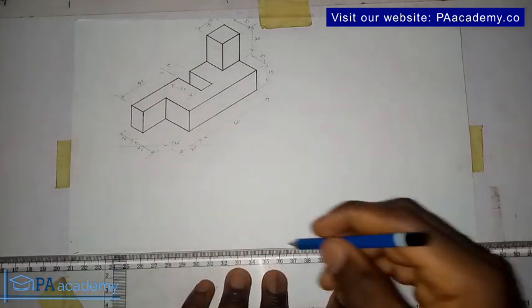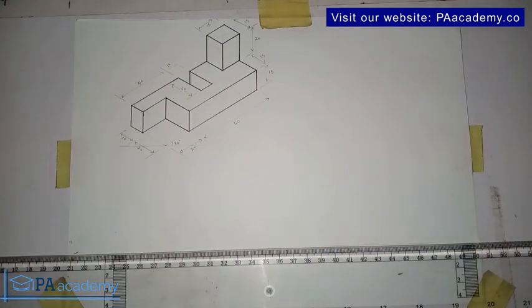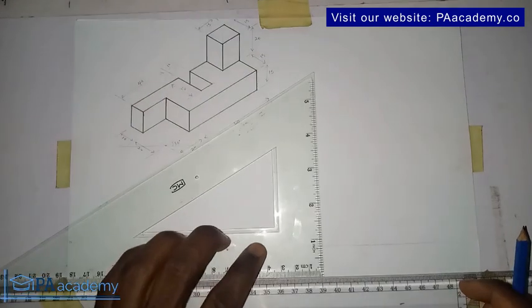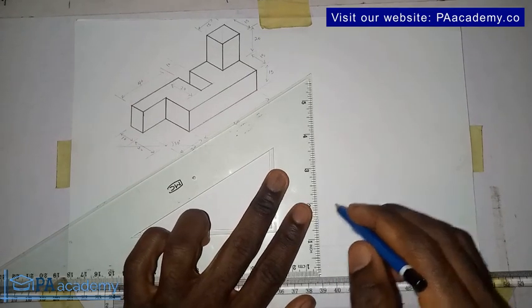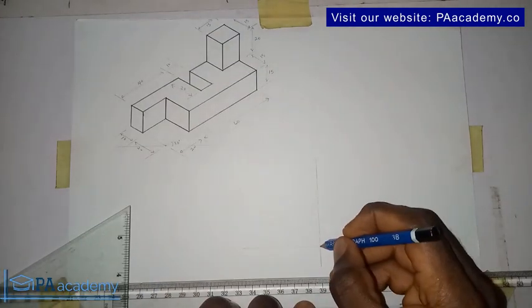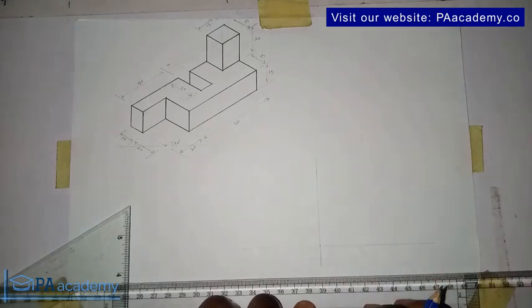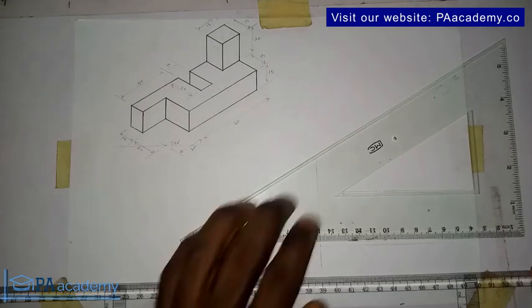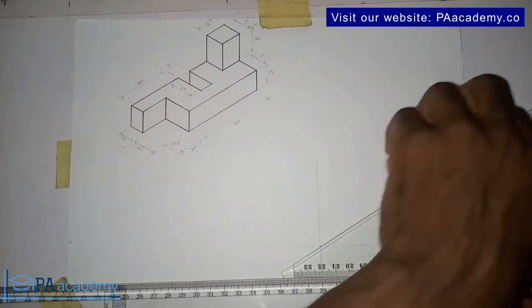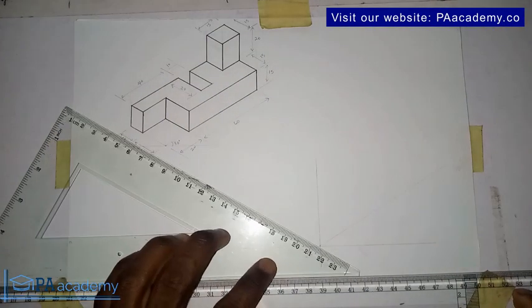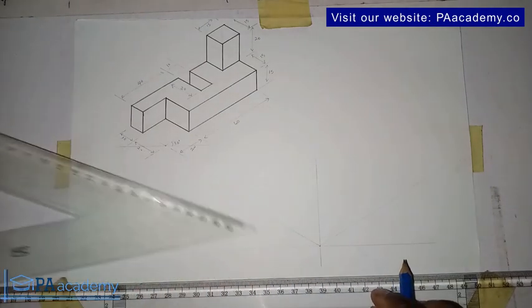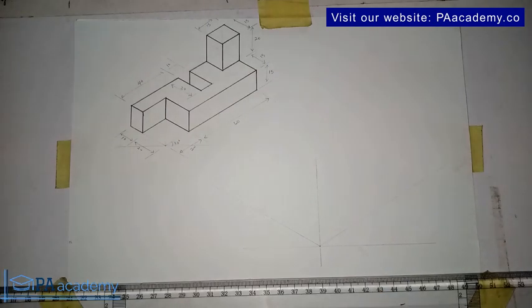So to start with, we are going to be drawing our horizontal line. So I'll bring down my t-square a bit. Then I'll draw my vertical line. So now you notice the point of intersection. So this is it, the point of intersection. And then we bring in our set square. Place it on the t-square. And draw this line.